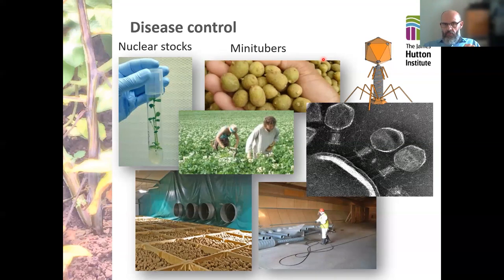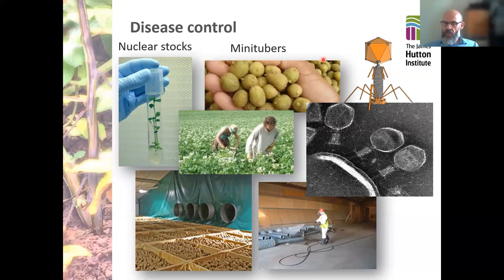Government inspectors come in twice, sometimes three times, a year to look for disease. If they do find disease, in order to keep a check on it and make sure it doesn't get out of hand in the main production system, they can notify government, and this can affect the quality of the seed and therefore the money the farmer gets back for that seed.